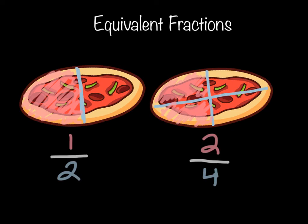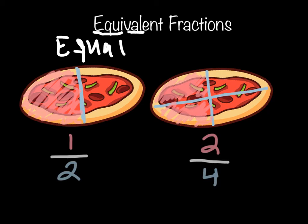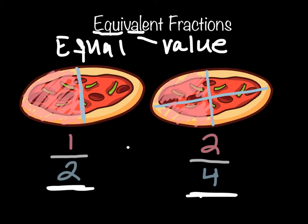In this video we're going to talk about how to make equivalent fractions. Here I have a picture of two pizzas each showing an equivalent amount. The word 'equivalent' contains 'equal' meaning equal, and 'val' meaning value — so equal value. Two fractions may look different but really they are the same value. This pizza shows one half, this pizza shows two fourths, but notice that the same amount of pizza is still colored in. One half is equal to two fourths.